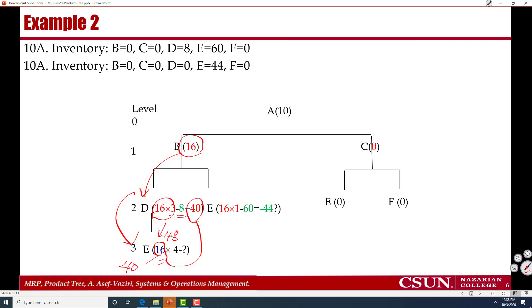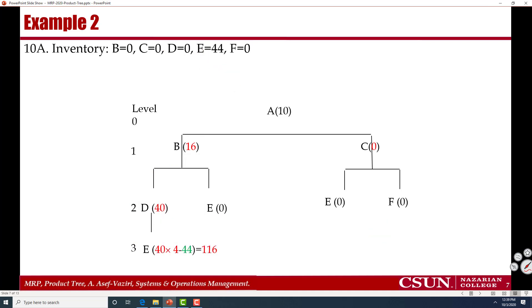Make it 40. Now 40 times 4 is equal to 160E. But I have 44E over there, which is here too. Subtract minus 44. And that is 116. So this is the end of the story.